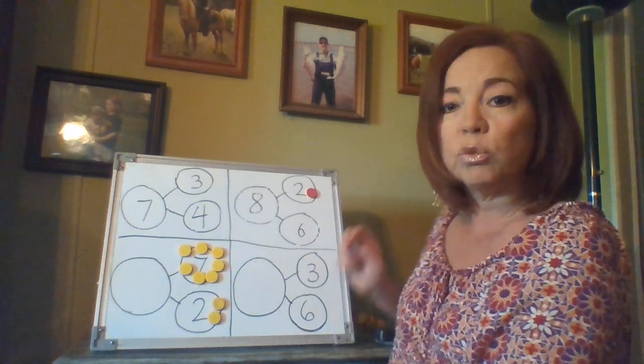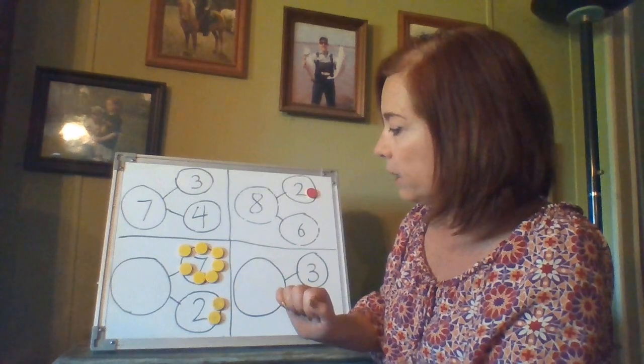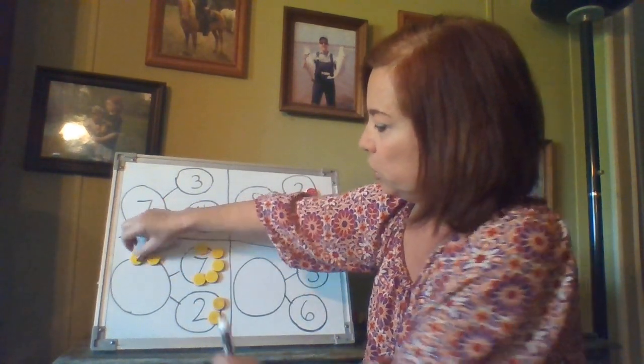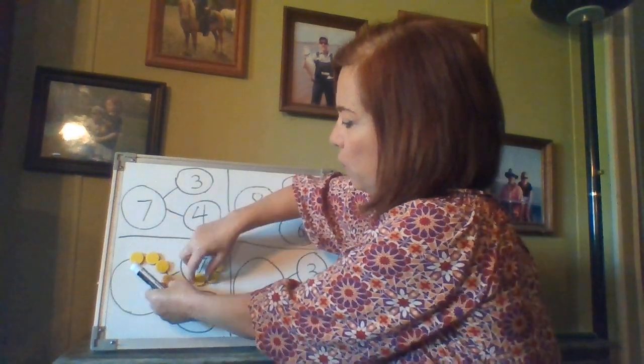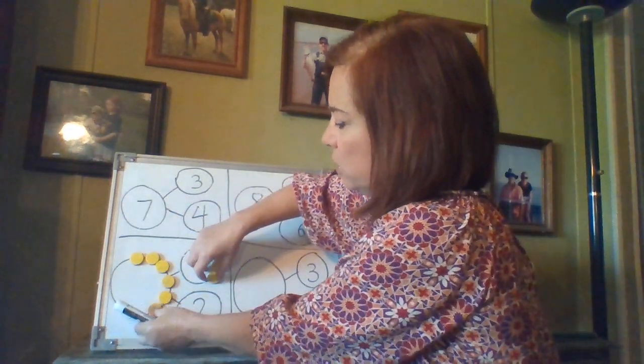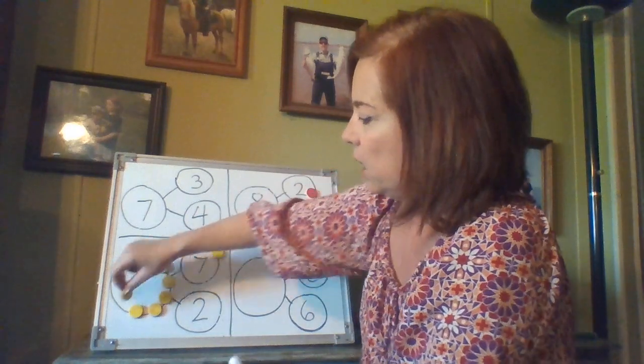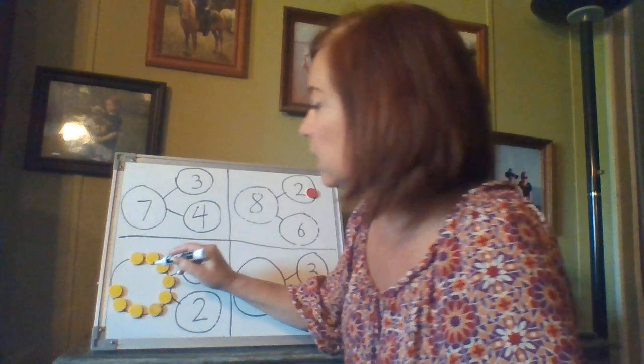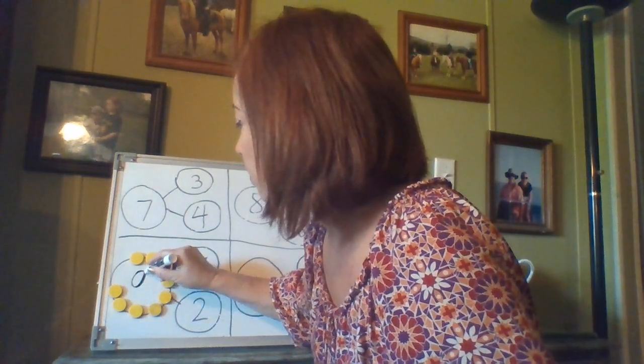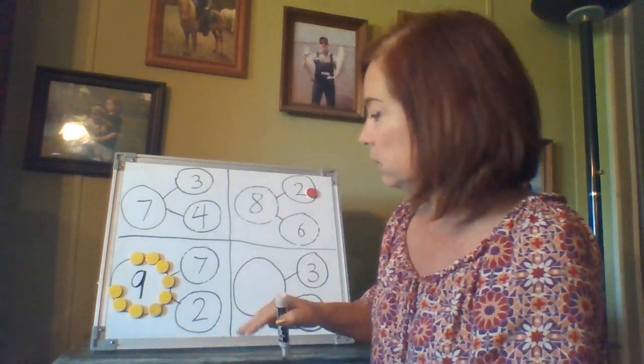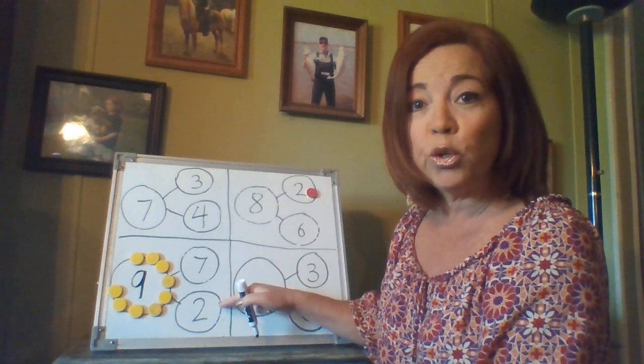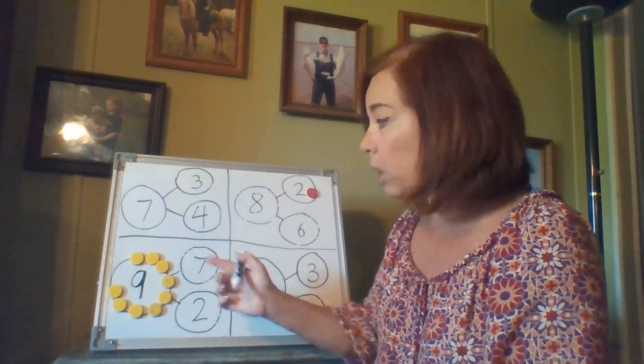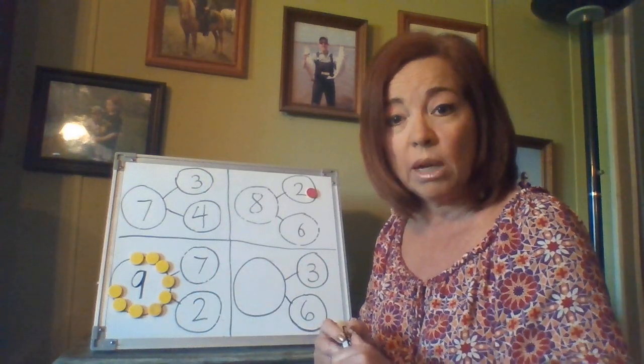So now, boys and girls, we have to put them all in here or count them all. They're going to go in here. One, two, three, four, five, six, seven, eight, nine. So the answer is nine. Nine is the whole part. Nine. So seven plus two equals nine. Seven is a part. Two is a part. And nine is the whole number.